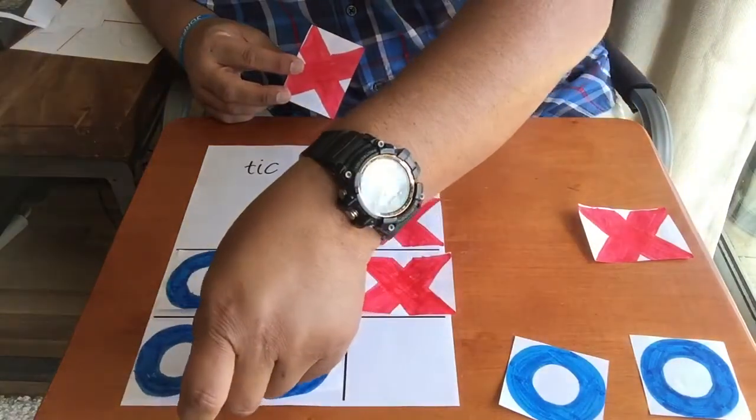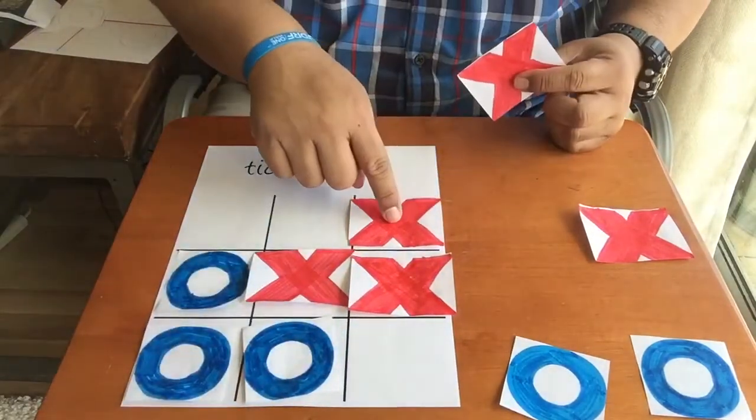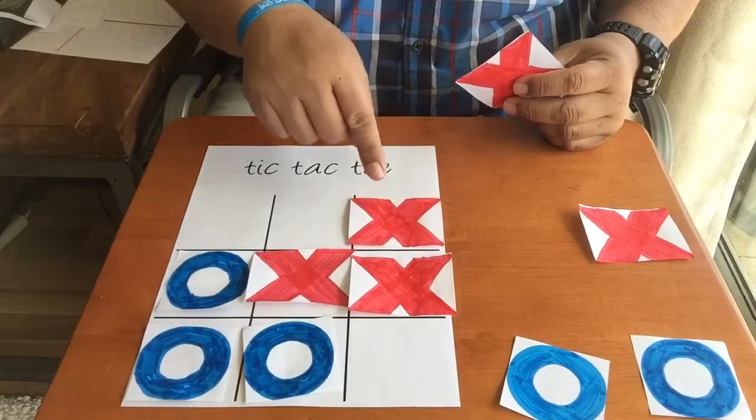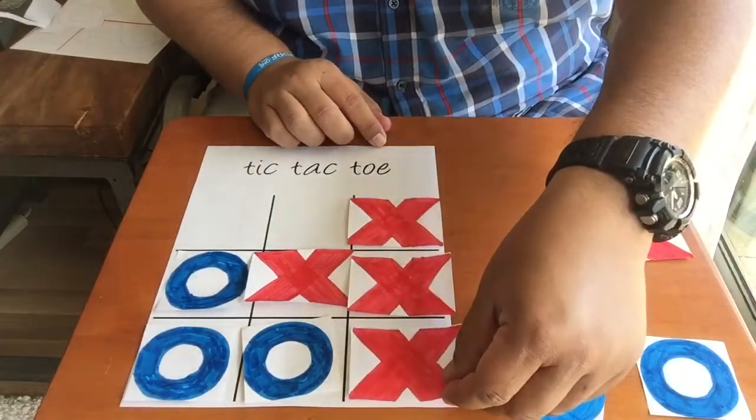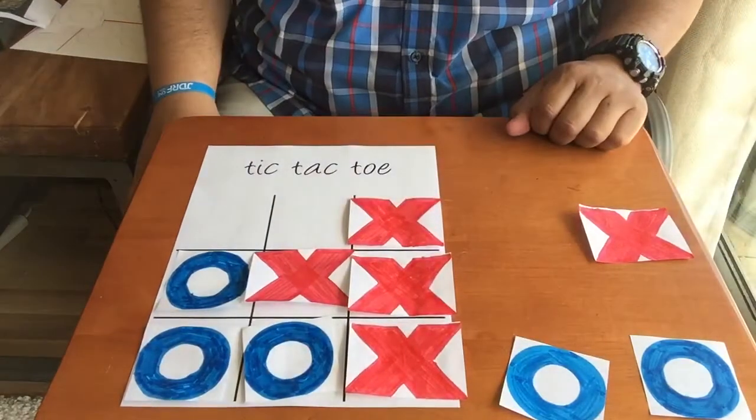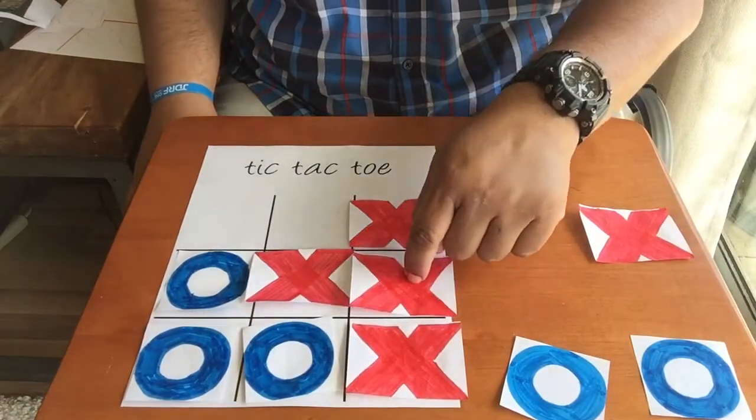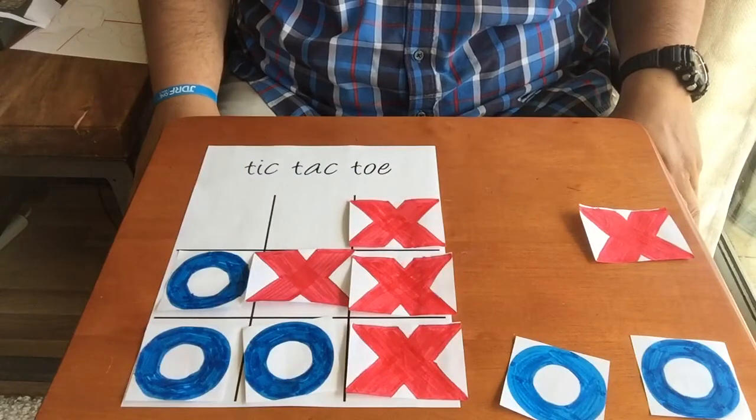If he blocks me here, that way I don't have one, two, three in a row, I set myself up to go here. And I just won. Tic-tac-toe. Three in a row.